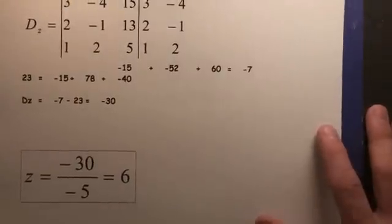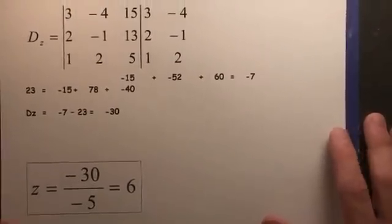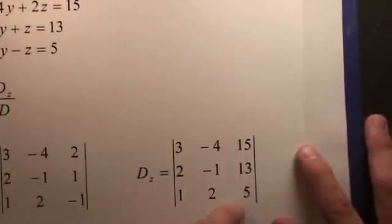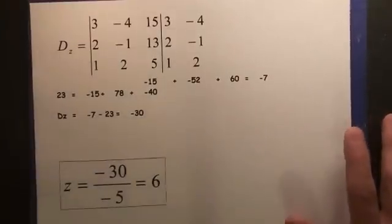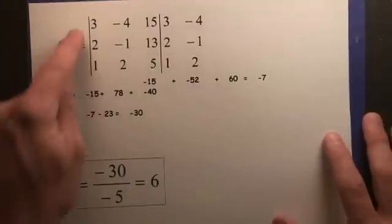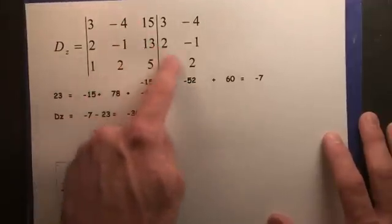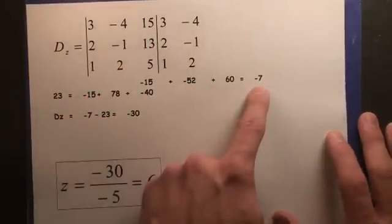All right. Now we do d sub z. Just like we showed in the beginning, we replace the z coefficients with the 15, 13, and 5. So here we go. 3 times 1 times 5 is negative 15. 4 times 3 times 1 is negative 52. 15, 2, and 2, 60. Add them up, negative 7.